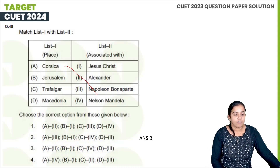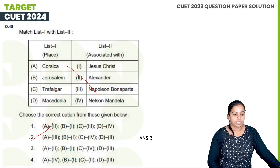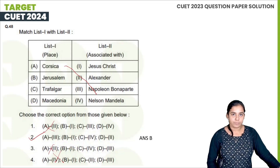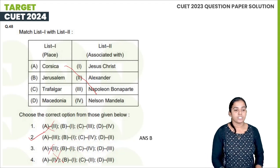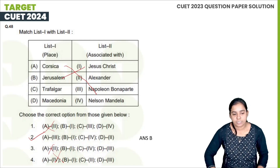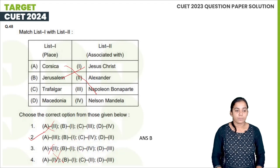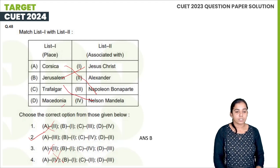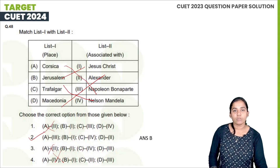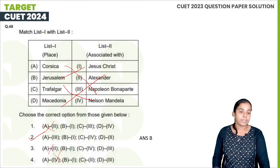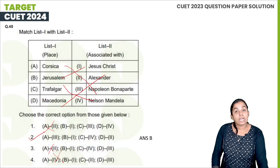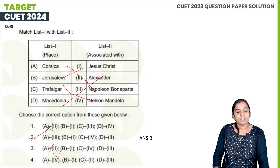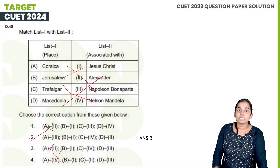Next question with options A, B, C, D. Matching historical figures with places: Jerusalem is the place associated with Jesus Christ; Trafalgar is related to Nelson Mandela; and Macedonia is related to Alexander. Corsica island is related to Napoleon. Option B is the right answer.